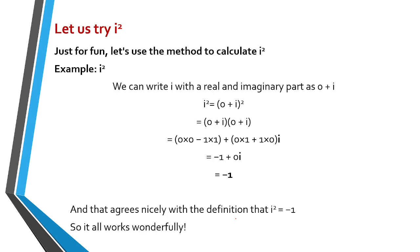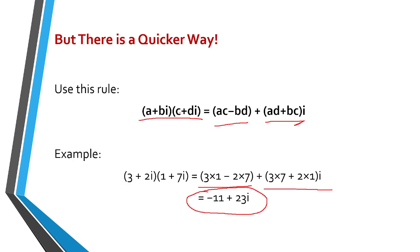So let us try i². Just for fun, let's use the method to calculate i². Example: i². We can write i with a real and imaginary part as 0+i. So i² equals (0+i)². That's (0+i) times (0+i).